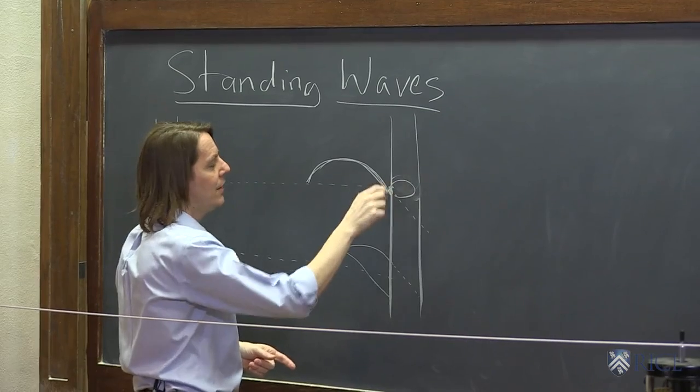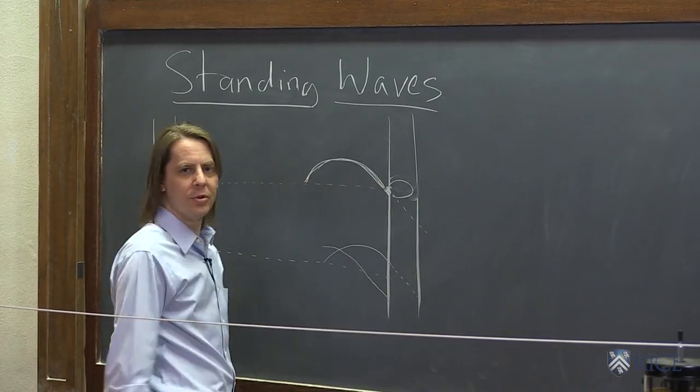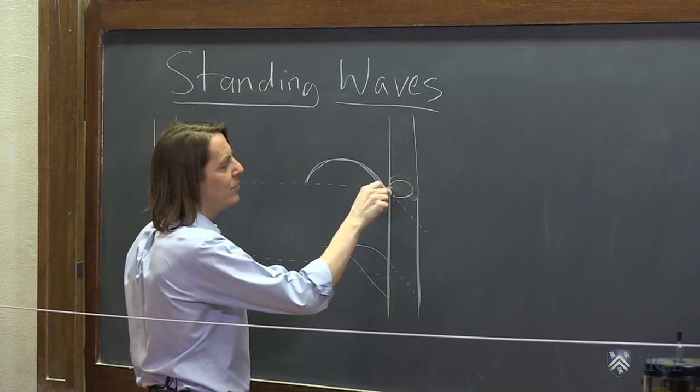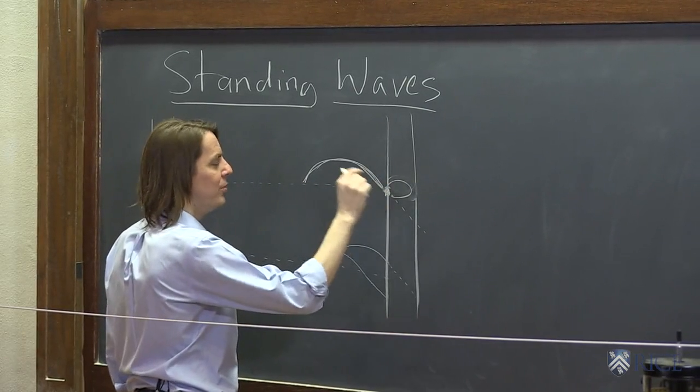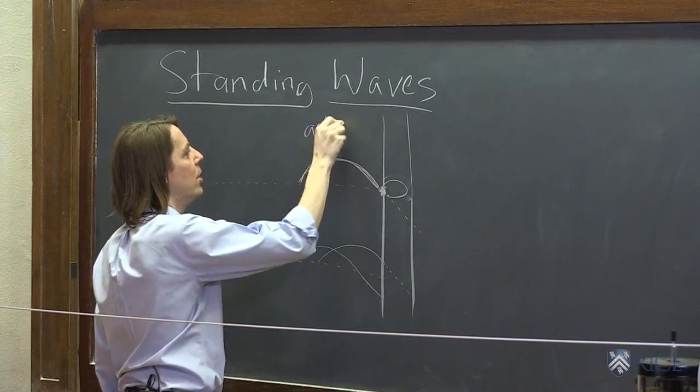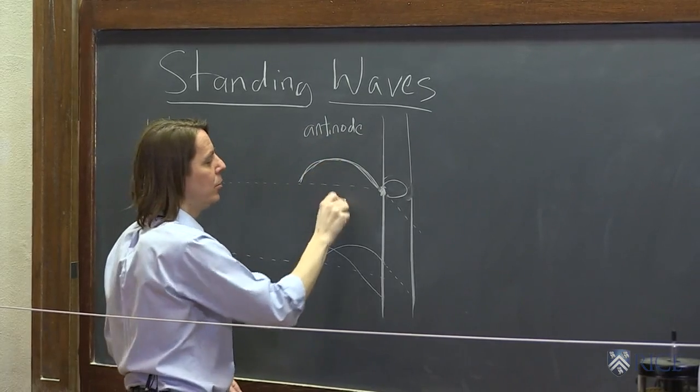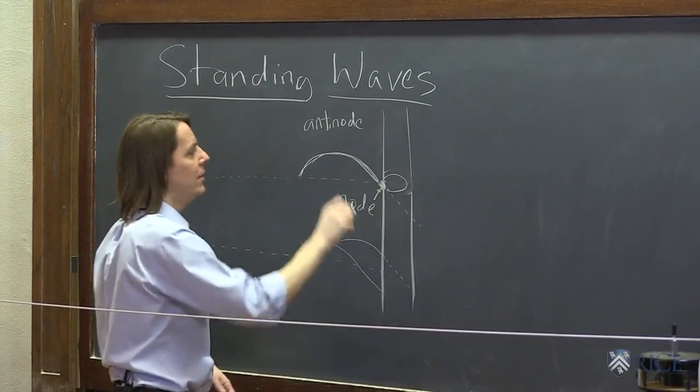So you could actually have the string tied and think of it as waves going this way and waves bouncing back superposed. And this would be a place that we call a node where it's superposed, it's stuck down. This was what we would call an anti-node where it's stuck up, where you get the maximum amplitude here and you get a node here where it's tied.